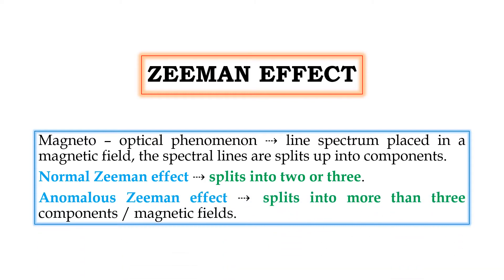What is meant by anomalous Zeeman effect? The splitting occurs into more than three components in an ordinary magnetic field — this is called anomalous Zeeman effect. This cannot be explained by classical theory, whereas normal Zeeman effect can be explained by classical theory. This is the basic difference between them.